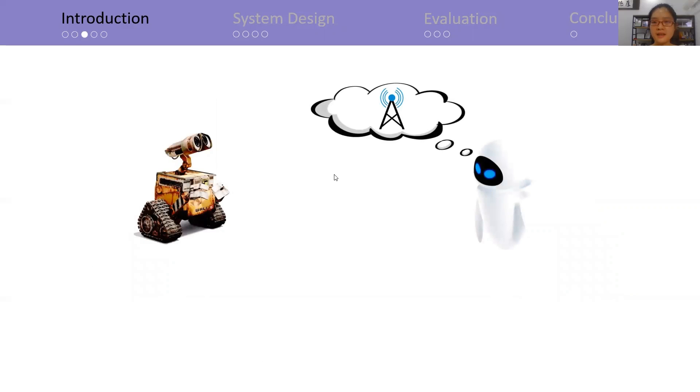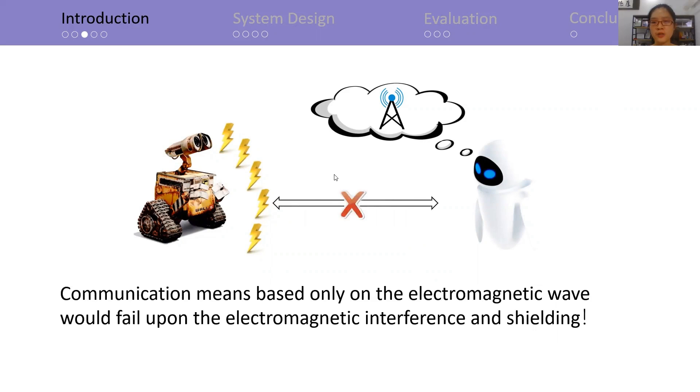In another case, they might share a compatible protocol for communications. But the electromagnetic interference, or shadowing, is catastrophic for communications. They are also hindered from talking to each other.